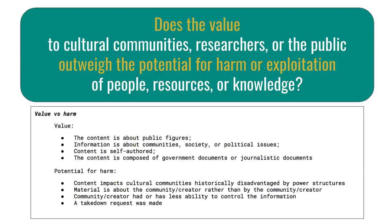For instance, we give added weight to potential value where there is a strong public interest in the material — considering factors like the content is about public figures, information is about community, society, or political issues, content is self-authored, or the content is composed of government or journalistic documents. We give added weight to the potential for harm where content impacts cultural communities historically disadvantaged by power structures, the material is about the community or creator rather than by them, the community or creator had or has less ability to control the information, or a takedown request was made. This approach makes use of an ethics of care framework that seeks to minimize harm — less prescriptive, it establishes general guidelines that allow local decision makers to weigh benefit versus harm, ideally in consultation with community representatives and local experts.